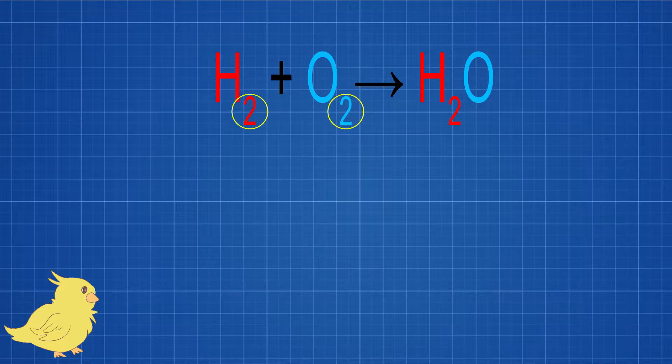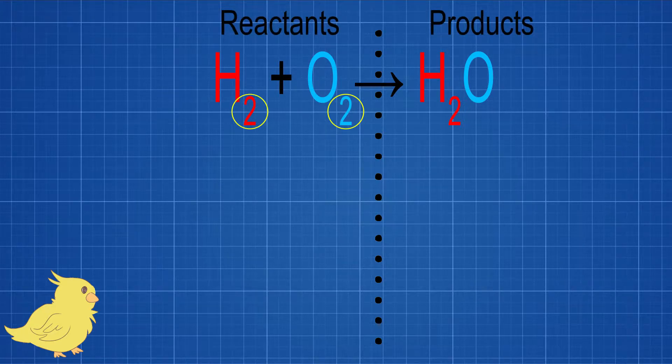We add our plus symbol between our reactants and we put an arrow to show that we are going to form the product. The product is water, H2O. The first thing that we are going to do is we are going to draw a dotted line down right through the arrow right down to the bottom of our page. That is going to separate our reactants and our products.